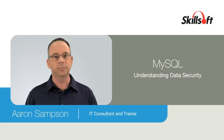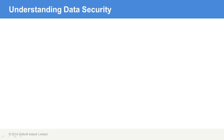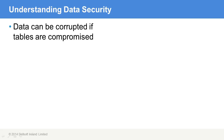Looking more closely at the security of the data itself, we need to be aware that data can become corrupted if the tables hosting that data become compromised. You might think: how is the table going to be compromised if we implemented all the security features at the network level, at the operating system level, at the permissions level? What are the ways by which anyone might compromise an individual table?